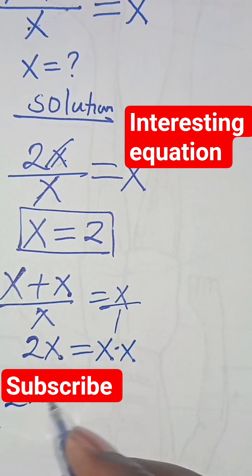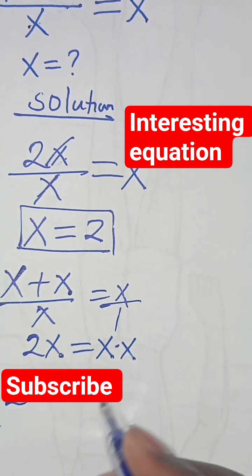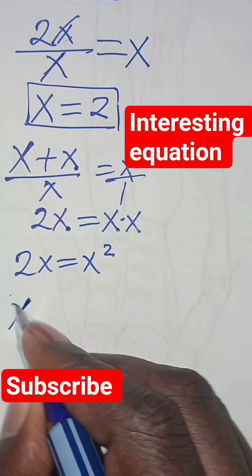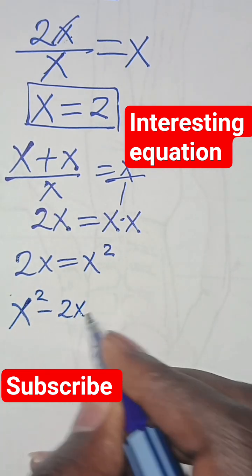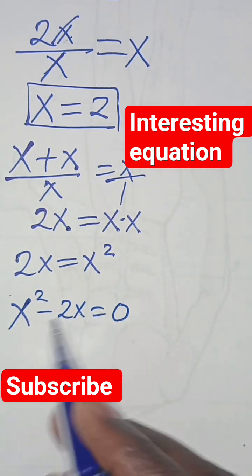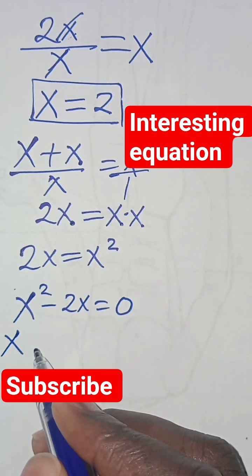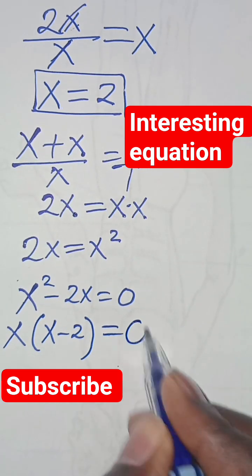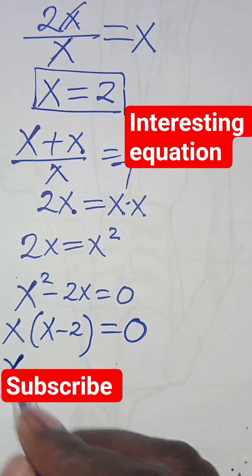In this case we'll have 2x, this is equal to x squared. So this implies x squared minus 2x is equal to zero. x is common here, so we factor out x. We'll have x times x minus 2, this is equal to zero.